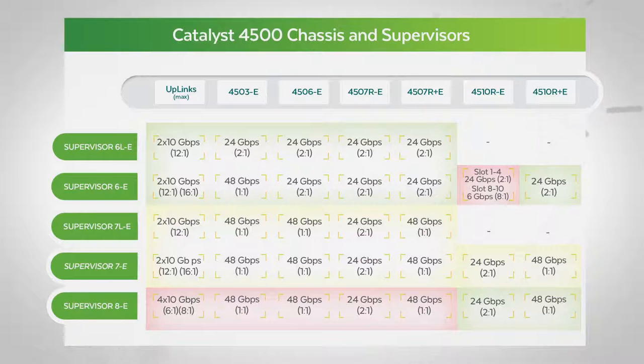Make sure to note that only the 4507R chassis offers supervisor redundancy, and that protects against single supervisor failure. In the 4503E and the 4506E chassis, it doesn't support redundant supervisors, and this makes it a single point of failure for the chassis.